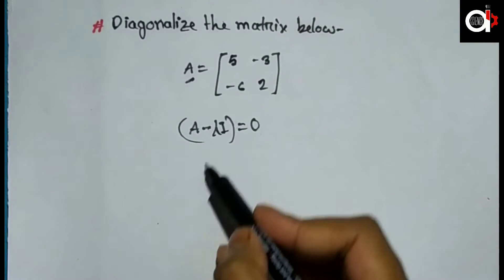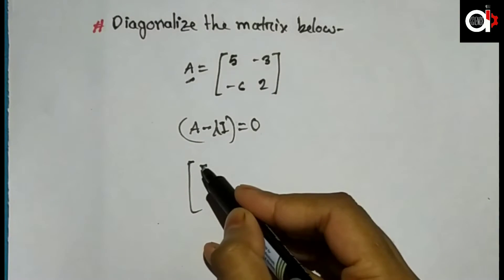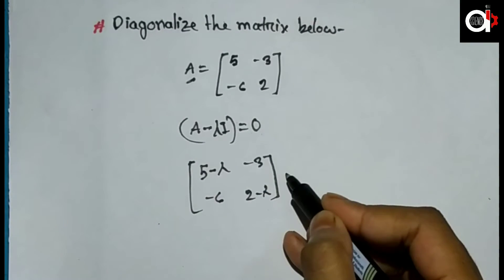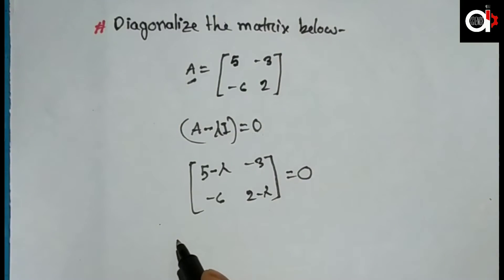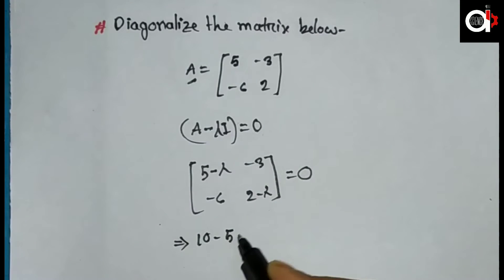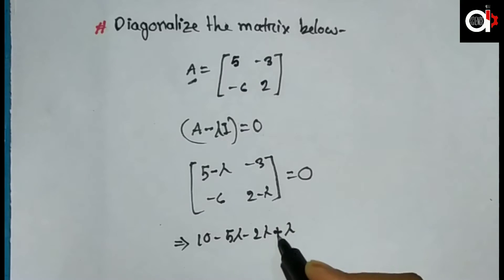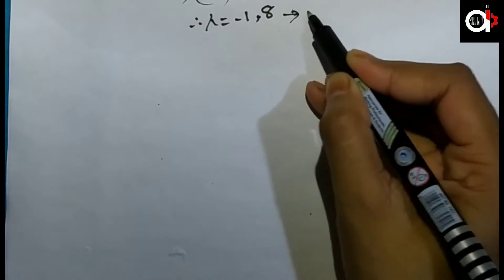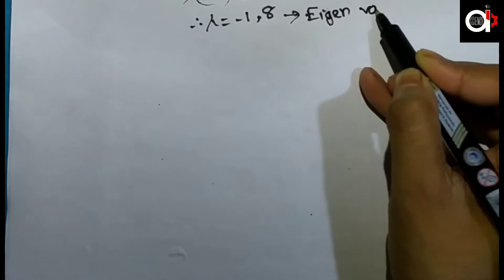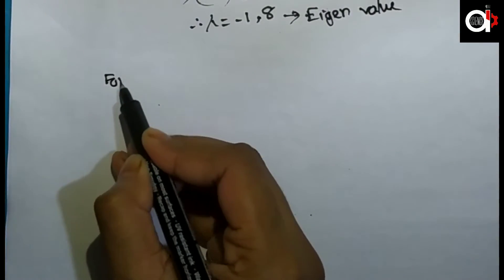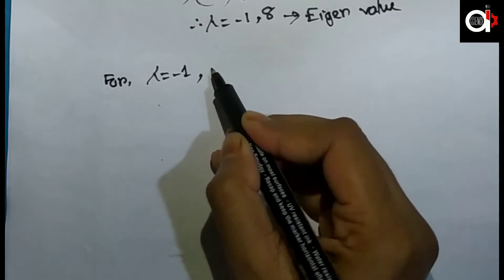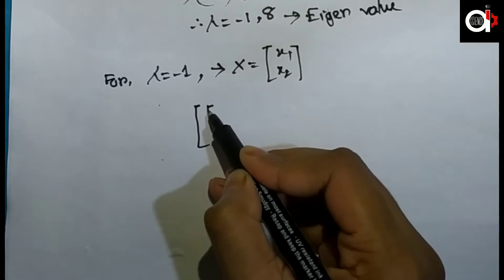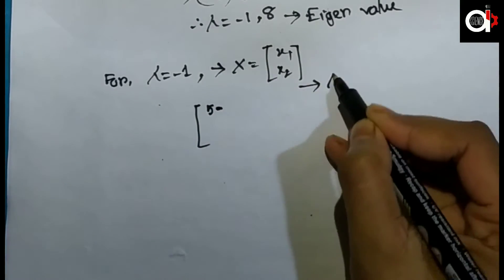For the example, we set up the characteristic equation: (5 − λ)(−2 − λ) − (−3)(−6) = 0. Expanding: 10 − 5λ + 2λ + λ² − 18 = 0, giving λ² − 3λ − 28 = 0. For λ = −1, we substitute into (A − λI)x = 0.